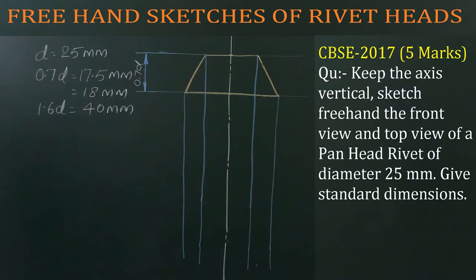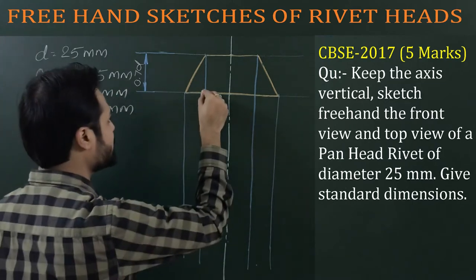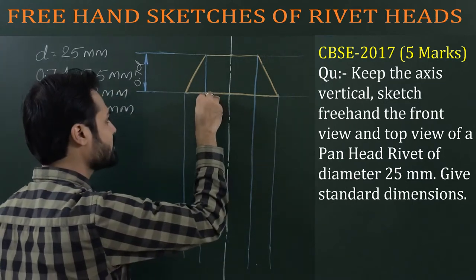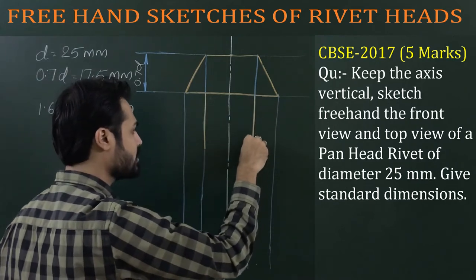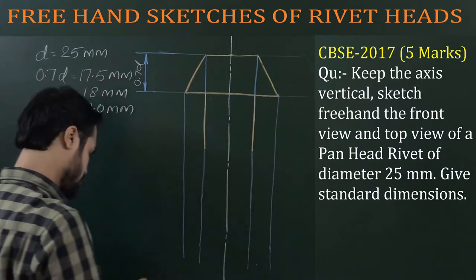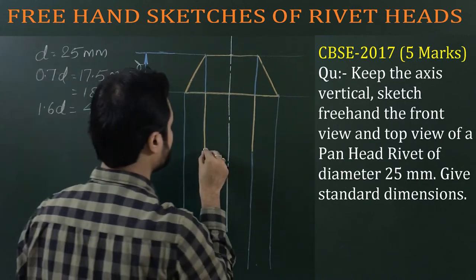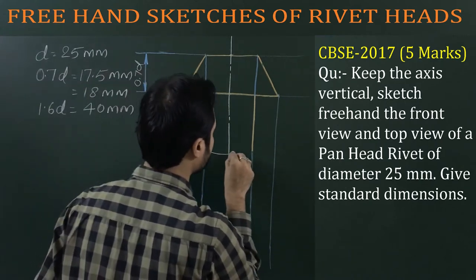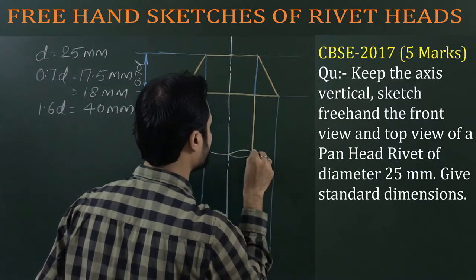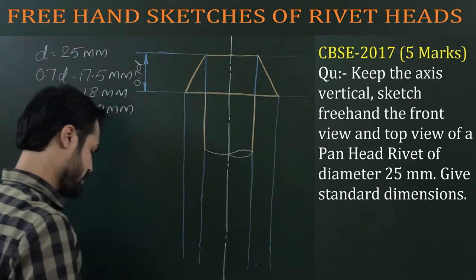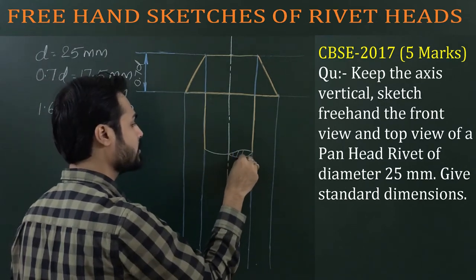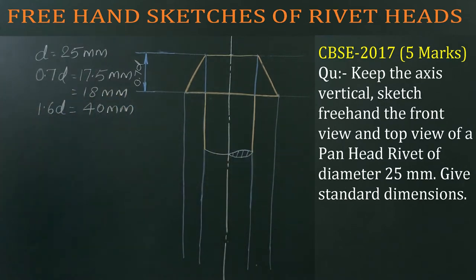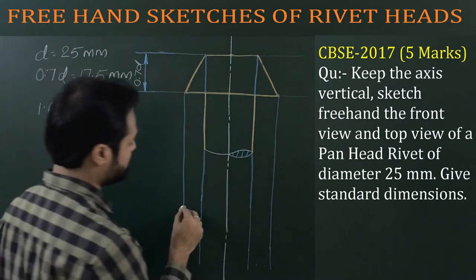For a suitable length as per space available on your sheet, draw the shank part of the rivet. Then draw the center line for the top view.